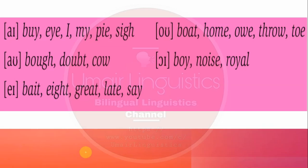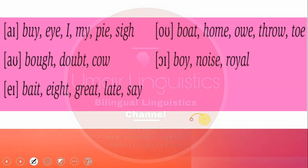Some examples of diphthongs include: 'I' as in 'by', 'my', 'pie'; 'ei' as in 'great', 'late', 'say'; 'oi' as in 'boy', 'noise', 'royal'; and 'ou' as in 'boat', 'home', 'throw'. The diphthong 'ou' should not be pronounced as two separate sounds 'o-u' — we just say 'o', and it is transcribed accordingly in British English.